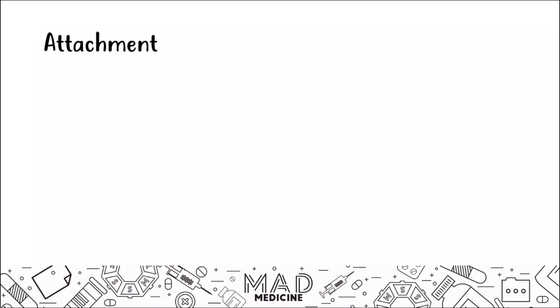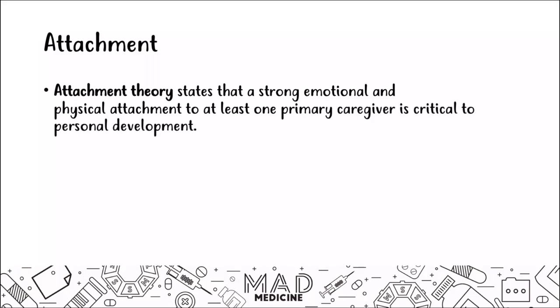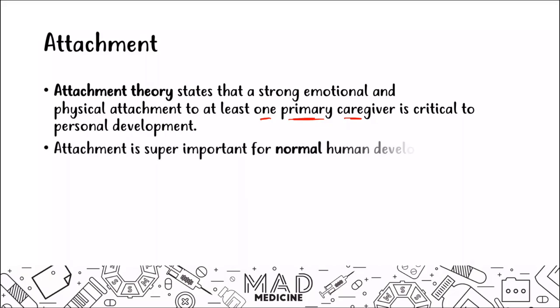Let's talk about attachment. Attachment theory states that a baby needs at least one strong emotional and physical attachment to at least one primary caregiver. Attachment is super important for normal human development — it's one of the key components a baby needs as they're developing from a child into a normal functioning adult.